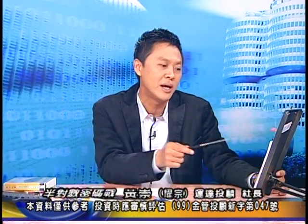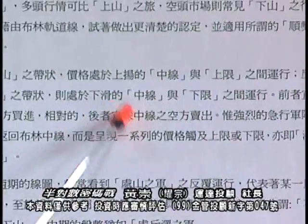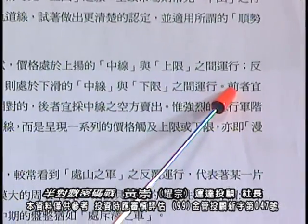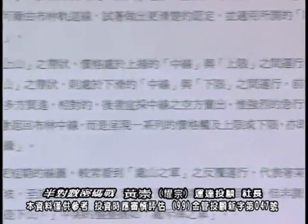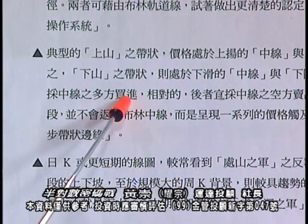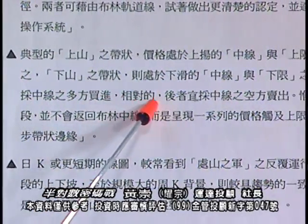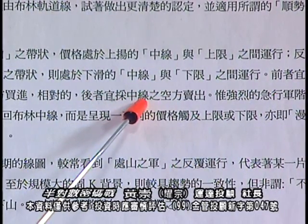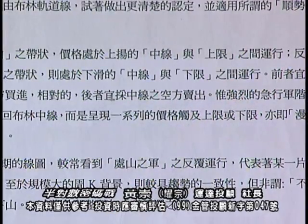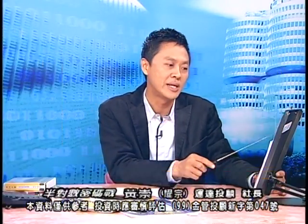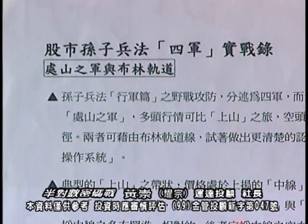到之前九五、九三之前通通是這樣。下山之帶狀則處於下滑的中線與下線之間運行。請問中線是不是下滑了？中線開始下滑了，下線在這裡，下山的行徑價格要處於哪裡？操作策略上：前則（上山行徑）以踩中線多方買進；後則（下山行徑）以反彈到中線為空方賣出，出自楚山之軍與布林軌道。